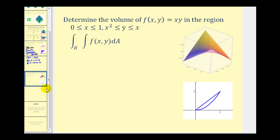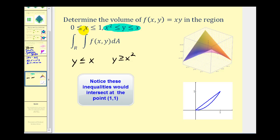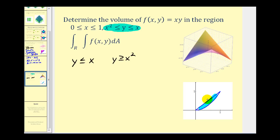Let's take a look at another example. Here we want to determine the volume of the given function in the region where x is on the closed interval from zero to one, and y is on the closed interval from x squared to x. This compound inequality means y is less than or equal to x and y is greater than or equal to x squared — so y is below the line y equals x and above the parabola y equals x squared. With x on the closed interval from zero to one, our region of integration is the region between the parabola and the line.